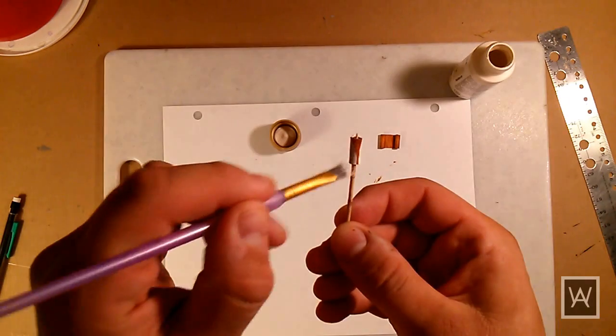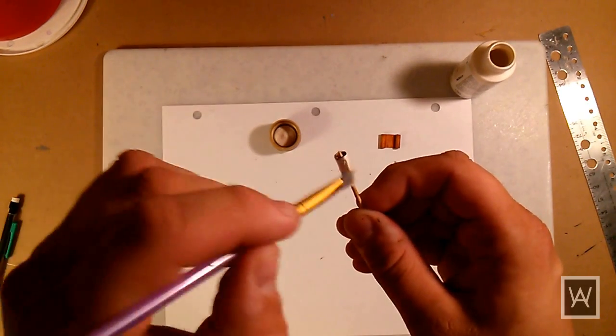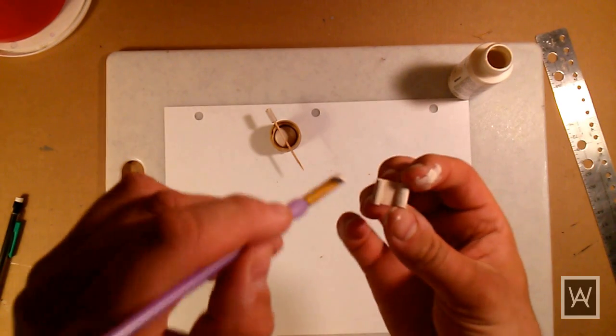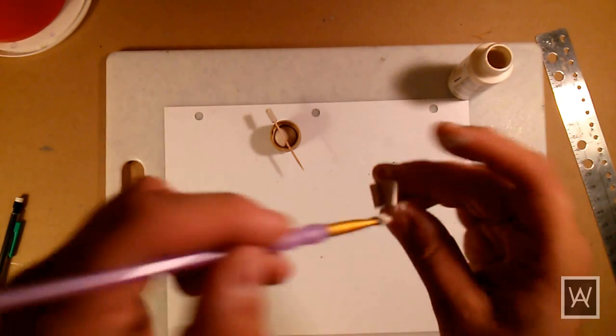Once perfectly dry, get some kind of off-white color. I'm using parchment. Again, apply a light coat. It should look streaky. Set aside to dry.